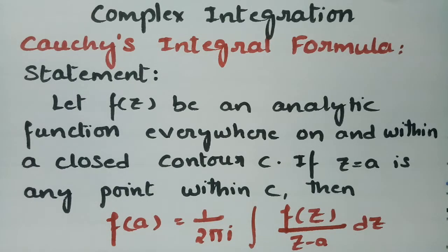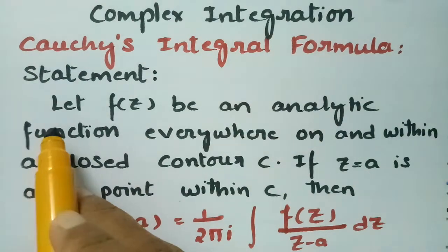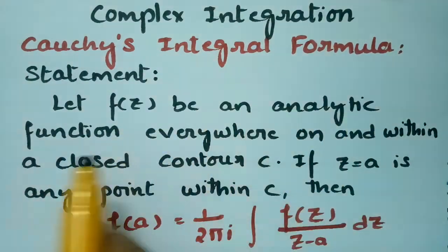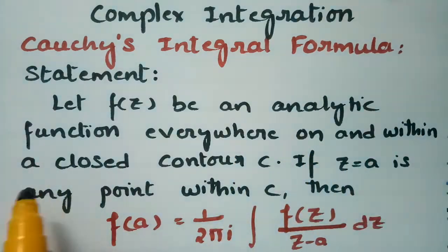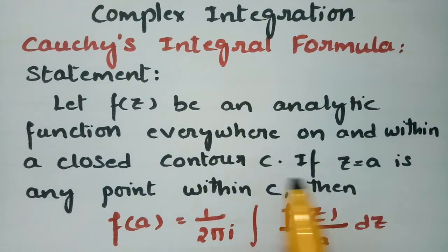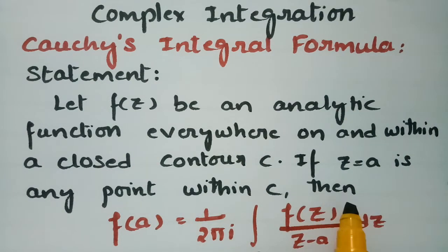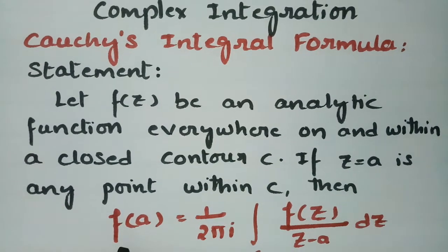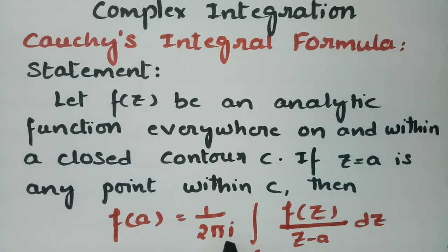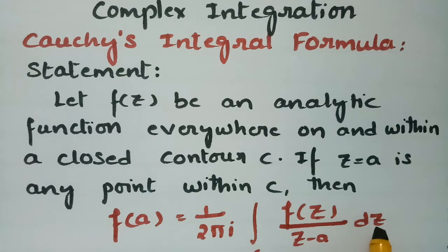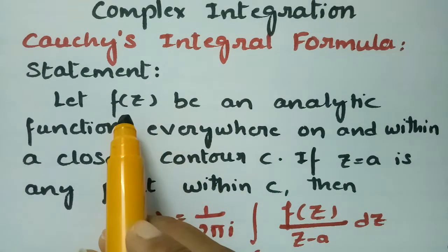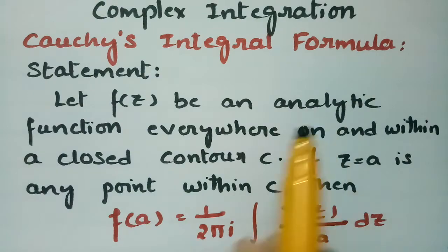Today's video I am going to explain Cauchy's integral formulae, and this topic is from complex integration. The statement states that let f of z be an analytic function everywhere on and within a closed contour c. If z equal to a is any point within c, then we have to show that f of a is equal to 1 by 2 pi i times of integral c of f of z by z minus a into dz.